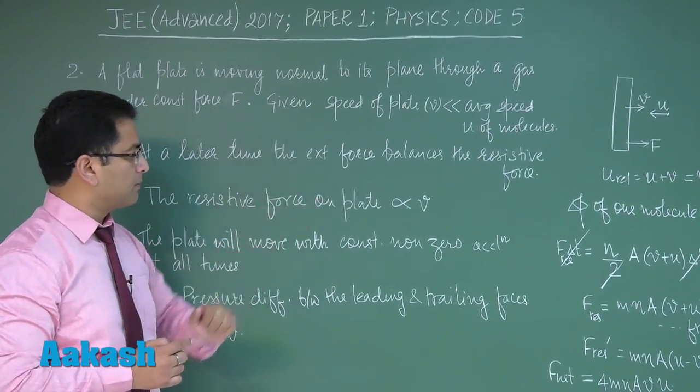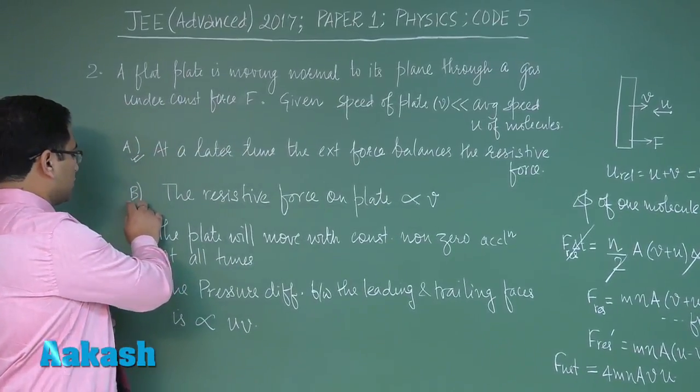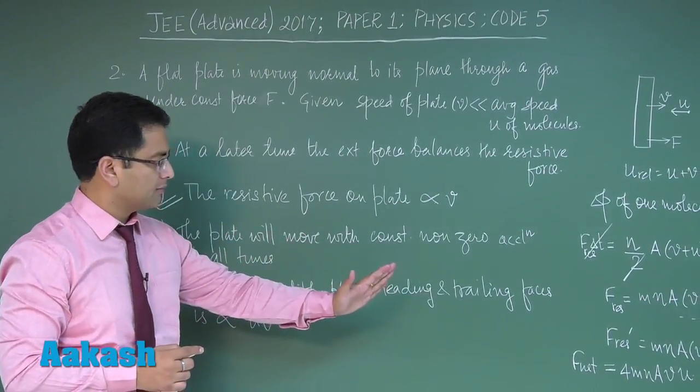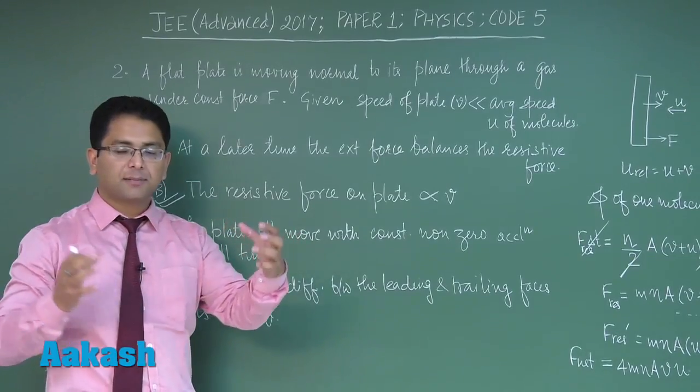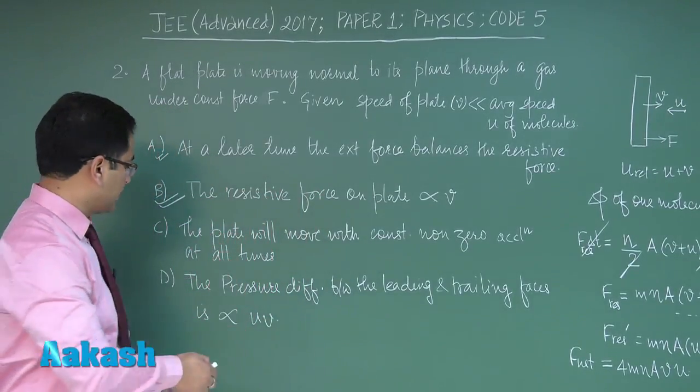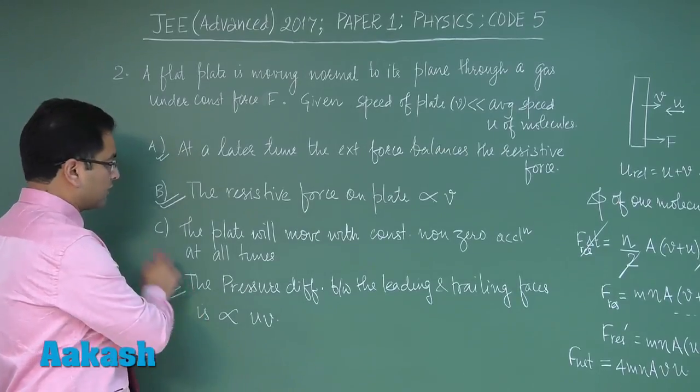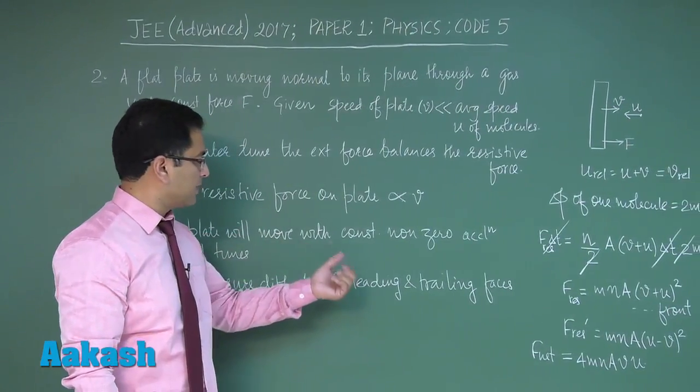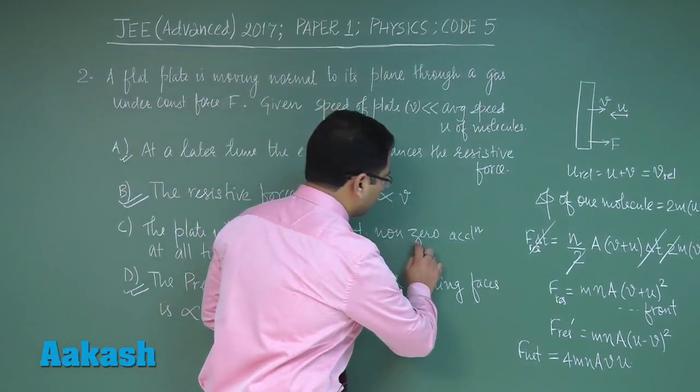So right from this logic we could see that the resistive force on the plate would be directly proportional to V. By the same logic, the pressure difference between the leading and trailing - because the pressure is caused by the collision of the gas molecules - so by the same token option D would be correct. And option C is straightforward incorrect because it says the plate is moving with acceleration.